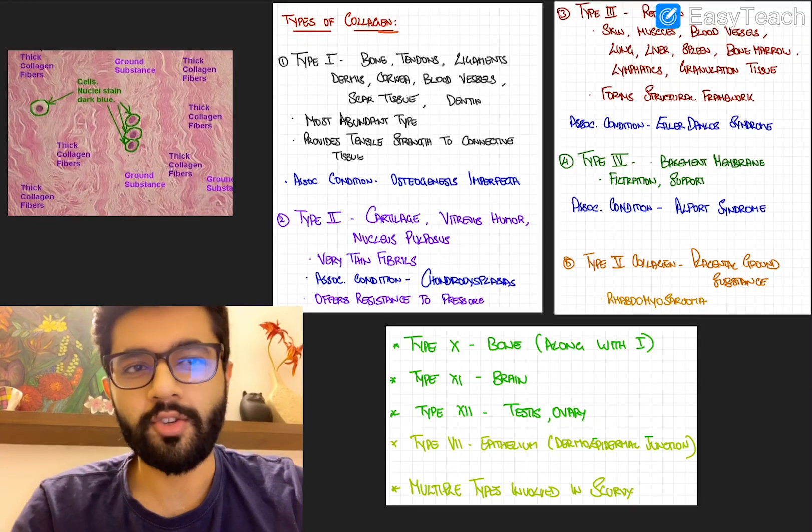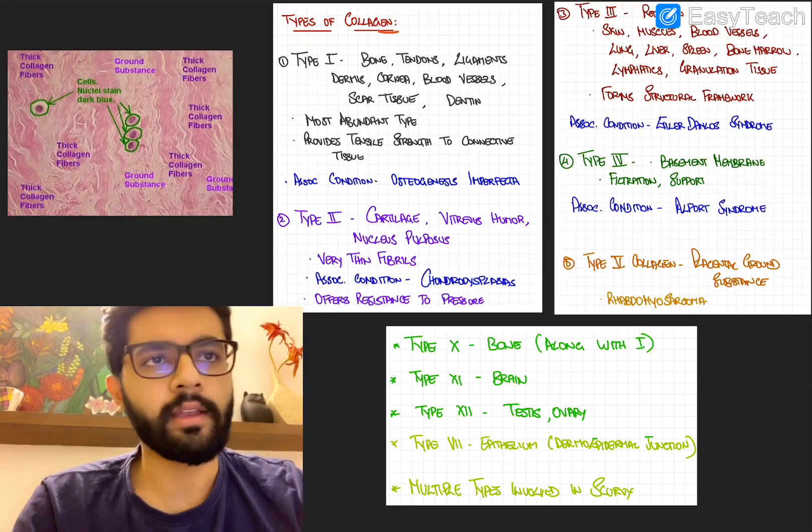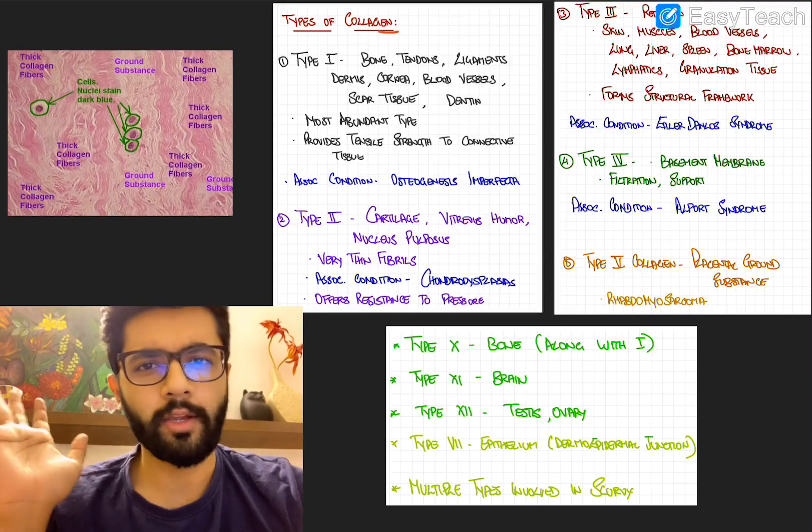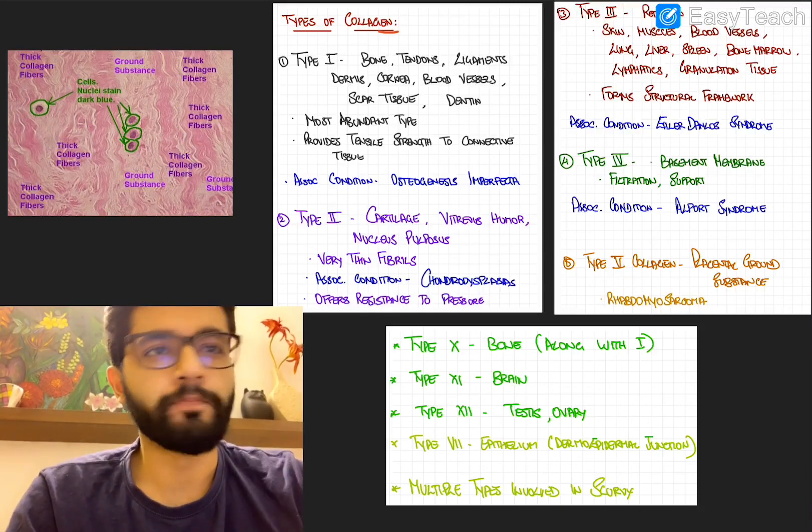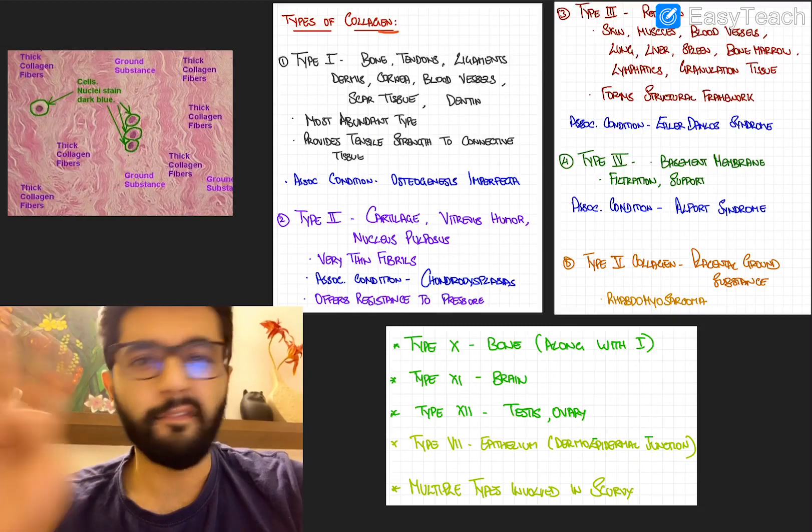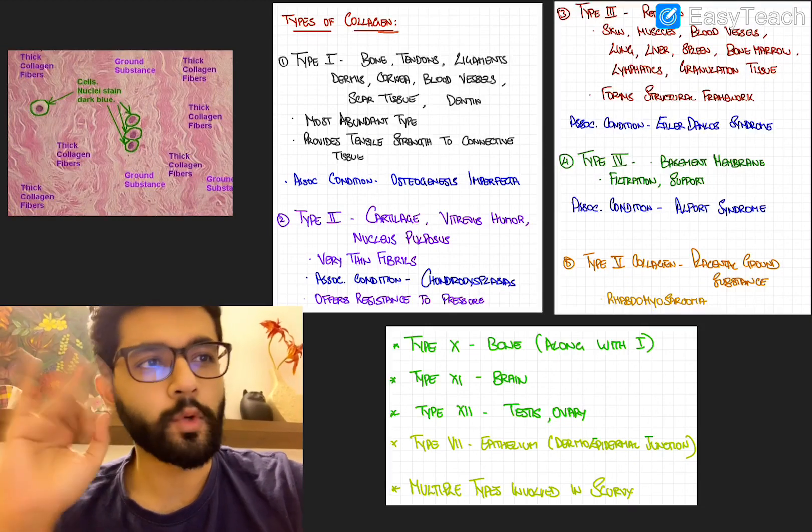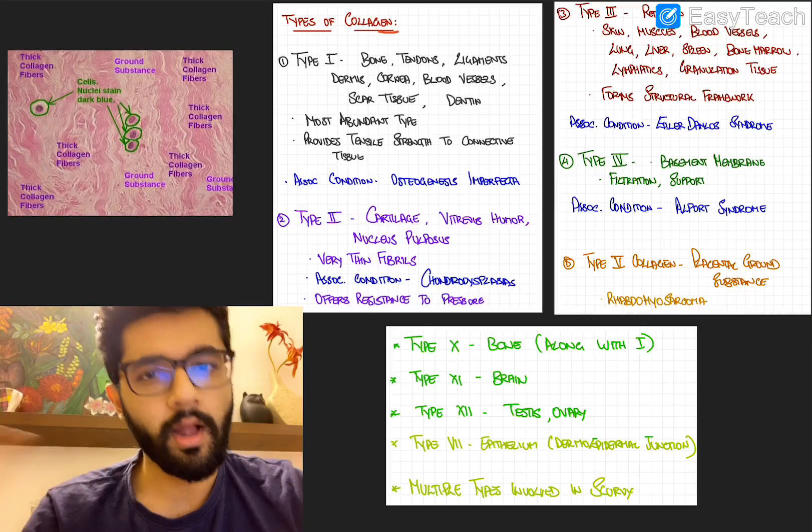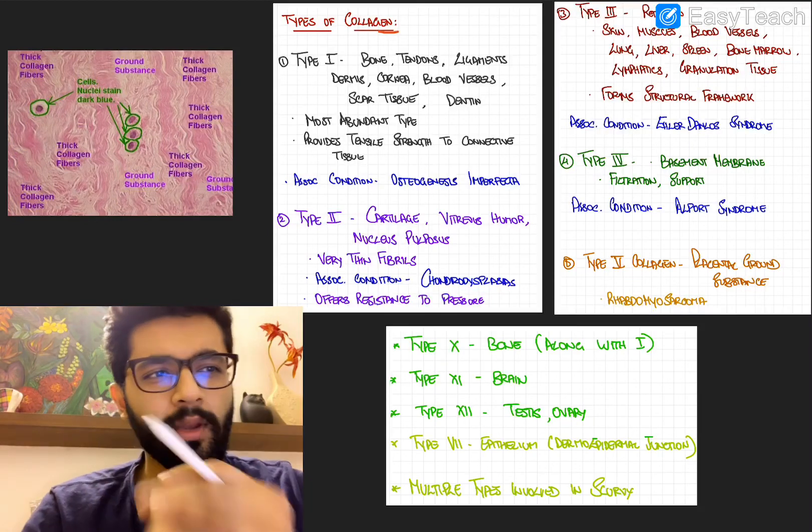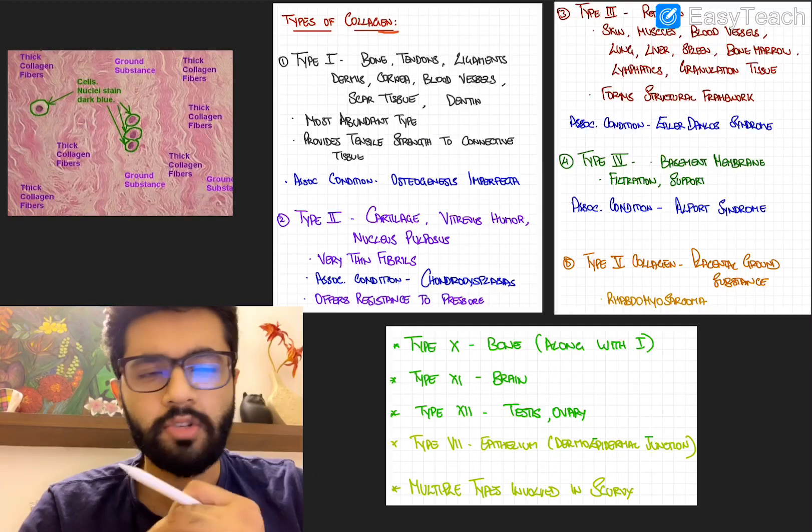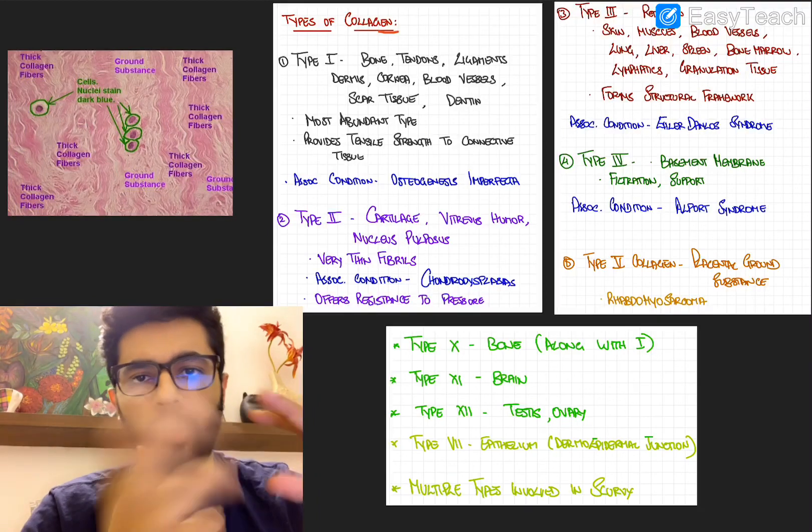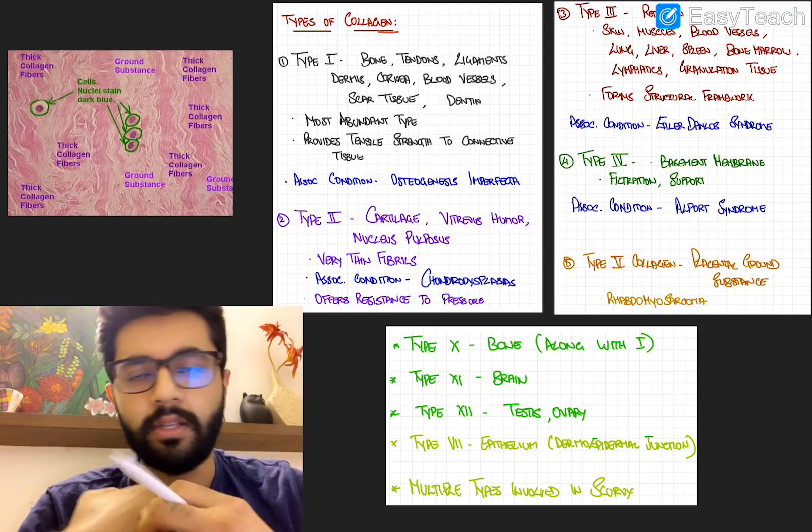Hi guys, welcome to this short session on types of collagen, a fairly high yield topic and one of the most high yield topics from general anatomy. So let's get started. We'll talk mainly about the four types of collagen: type 1, type 2, type 3, and type 4. These are the most asked types of collagen. After that, we'll discuss the miscellaneous types, just a point or two about each of them, and lastly, we'll go to a mnemonic which can help us remember this for good.